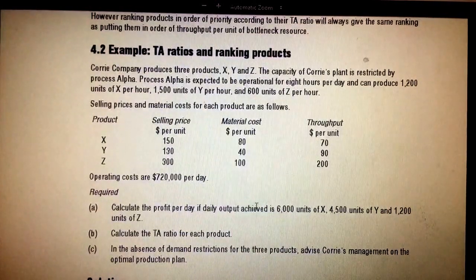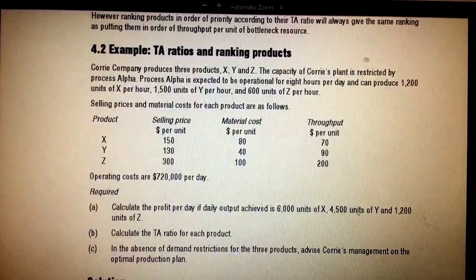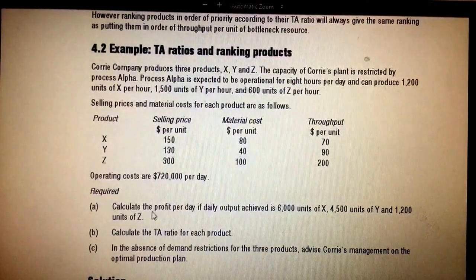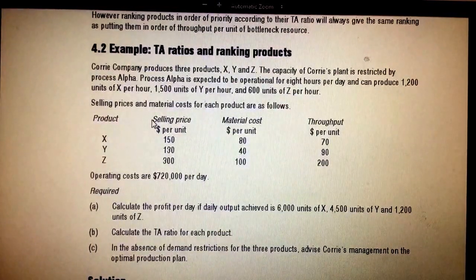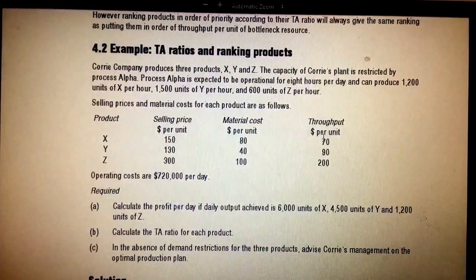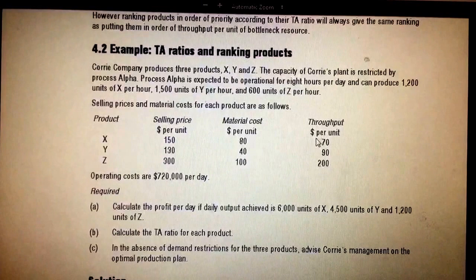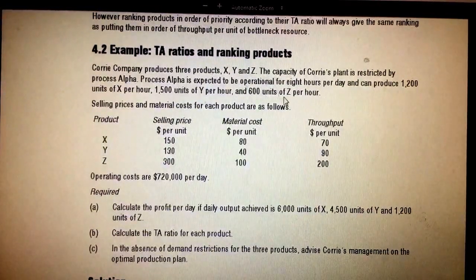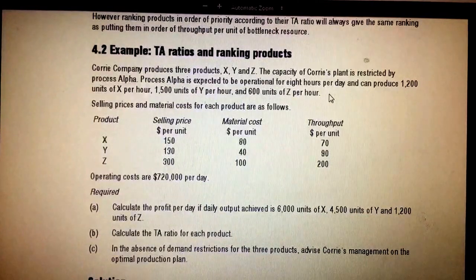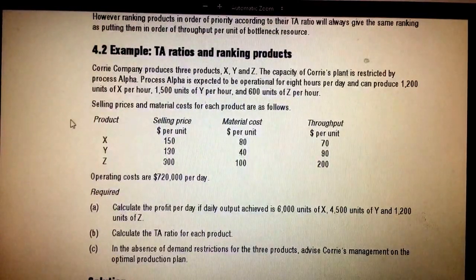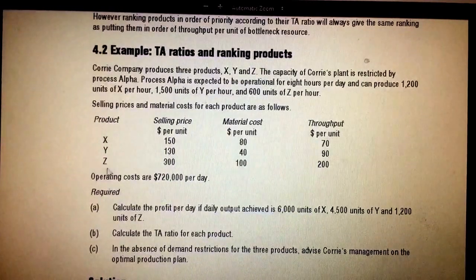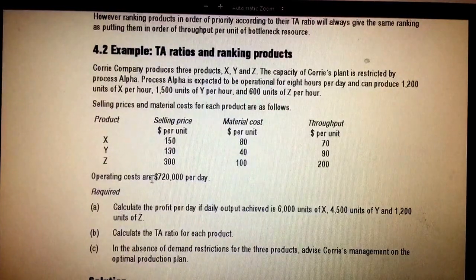The demand is also given. Calculate the profit of the daily output achieved: 6,000 units of X, 4,500 units of Y, and 1,200 units of Z. Note that selling price minus material cost is the throughput per unit. In the previous video it was throughput per machine hour, but here Process Alpha is the limiting factor since it operates only eight hours per day. You need to maximize profit by prioritizing one product, then allocating remaining hours to X or Z. Operating costs are 720,000.